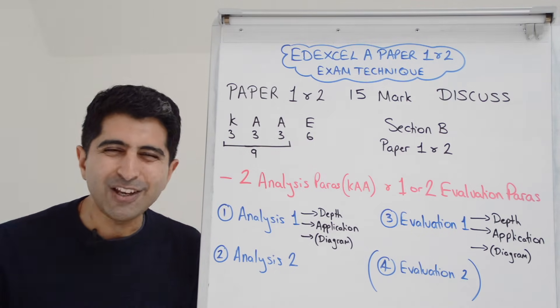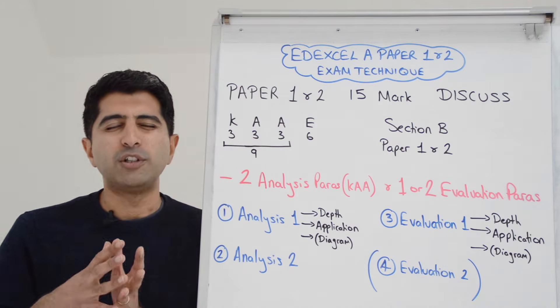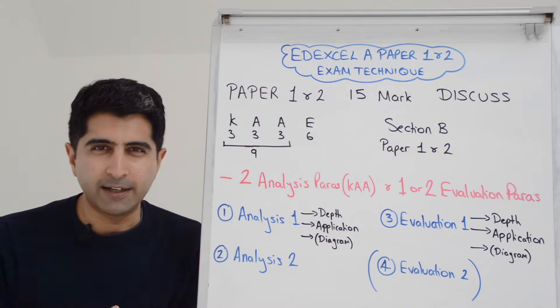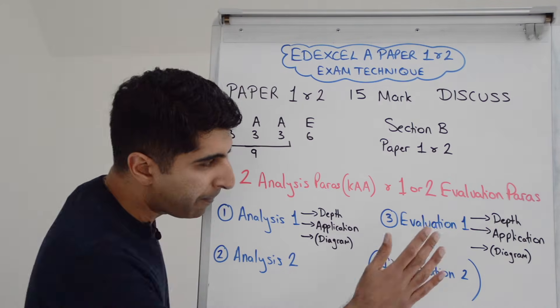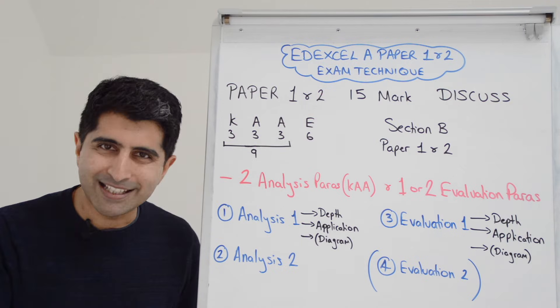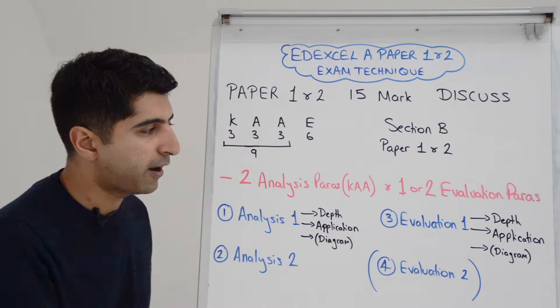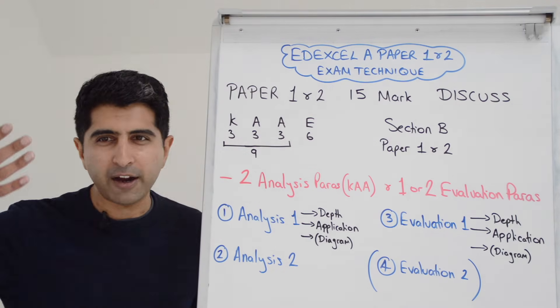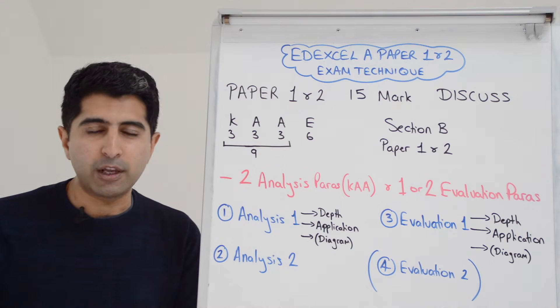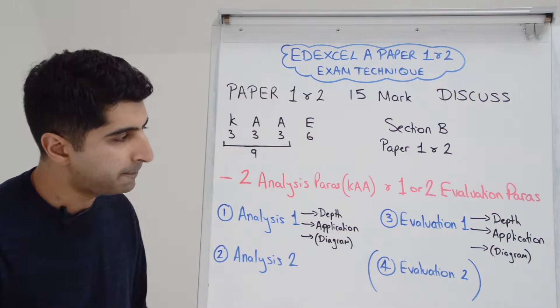And then your evaluation paragraph. Again, you're making an evaluation point, but you're developing it in maximum detail, as much detail as you can. You're applying by using the extracts, integrating that within your evaluation paragraph. Again, you're being flexible with diagrams. Is there a diagram that can illustrate your evaluation point? If there is, then draw it. If there isn't, don't worry about it.